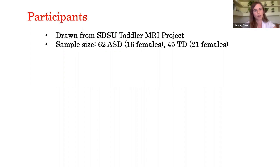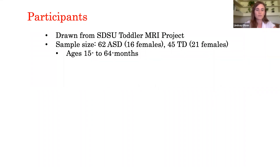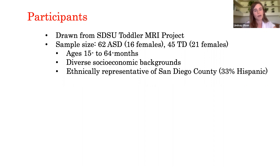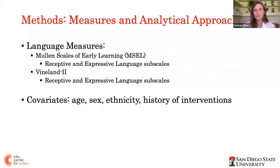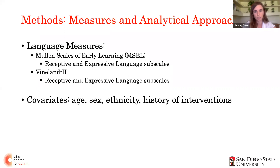Participants from our study were drawn from a larger study on early brain development in autism. Our sample included 62 children with ASD and 45 typically developing children ages 15 to 64 months from a diverse array of socioeconomic and ethnic backgrounds representative of the San Diego metro area. Histograms show SES variables for our sample, showing a wide distribution of maternal educational level, household income, and median income derived by postal code. We used multiple regression models with socioeconomic variables and diagnosis as explanatory variables and receptive and expressive language scores as separate outcome variables, controlling for relevant covariates when necessary.